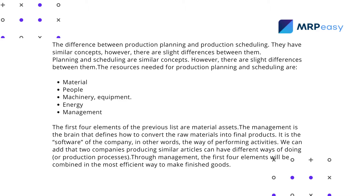The resources needed for production planning and scheduling are material, people, machinery, equipment, energy, and management. The first four elements are material assets. Management is the brain that defines how to convert the raw materials into final products — it is the software of the company, in other words, the way of performing activities. Two companies producing similar articles can have different production processes. Through management, the first four elements will be combined in the most efficient way to make finished goods.